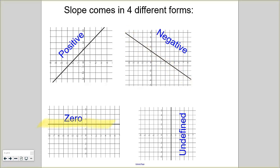We have a zero slope, that's flat, and then we have the one that's undefined, that's vertical. So vertical lines are undefined slope and horizontal lines have a zero slope.